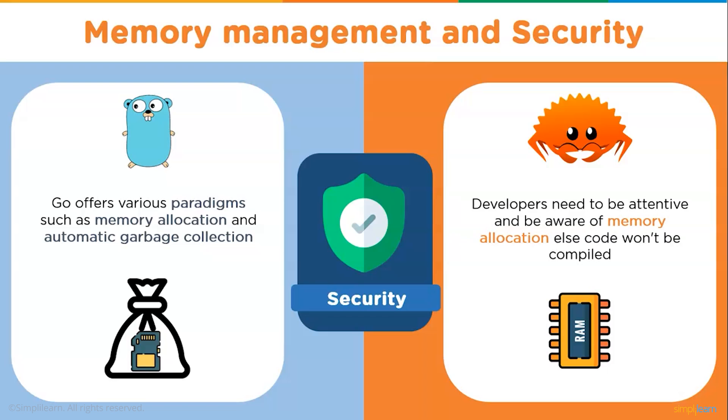On the other hand, Rust ensures no memory leakage during compile time. Moreover, the code won't compile until it's memory safe, which requires developers to be attentive and aware of memory allocation. Let's see the easiness to code and learn these languages.